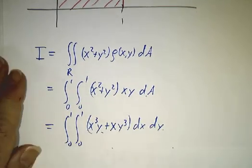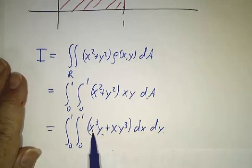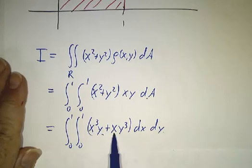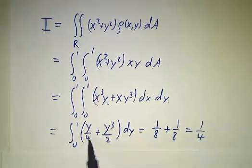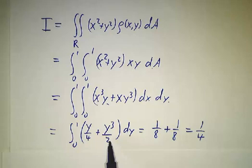And each one of those is an easy integral. The integral of x³ from 0 to 1 is a quarter. The integral of x from 0 to 1 is a half. So you get 1/4 y + 1/2 y³. Then you integrate that from 0 to 1 and you get 1/8 + 1/8 = 1/4.